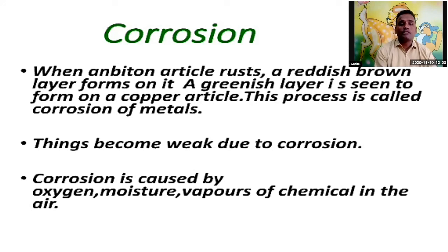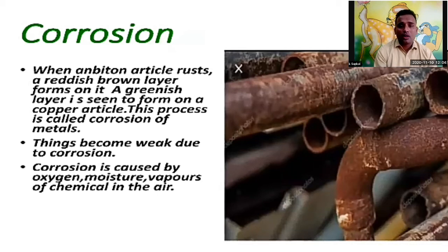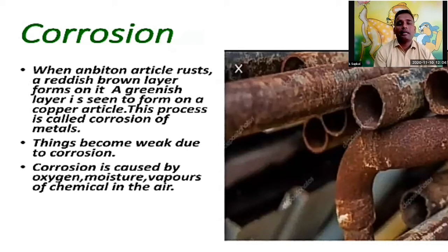Corrosion is caused by oxygen, moisture, vapor, or chemicals in the air. You can see a picture of metal with a brownish layer on it. Because of this, the metal becomes very weak and the quality of that metal is reduced. These things — oxygen, moisture, vapor, and chemicals in the air — always affect and cause corrosion.